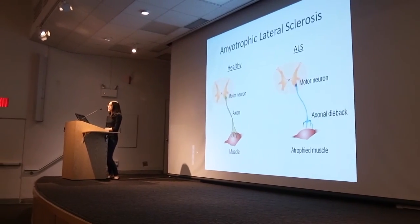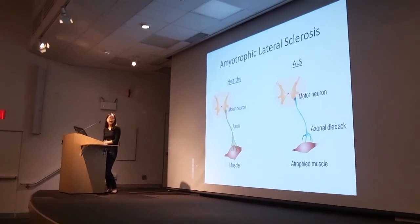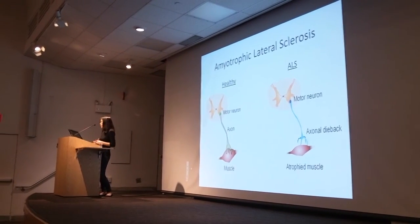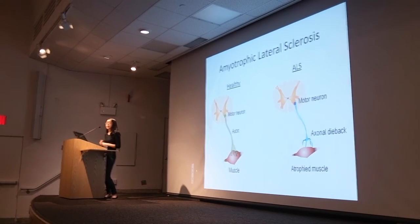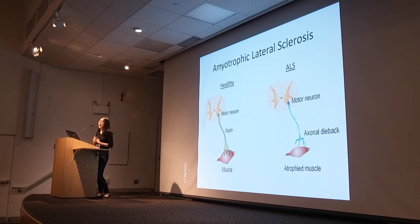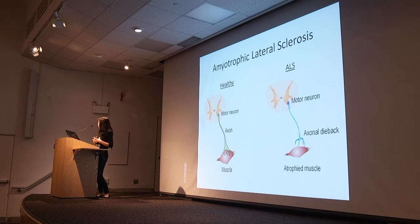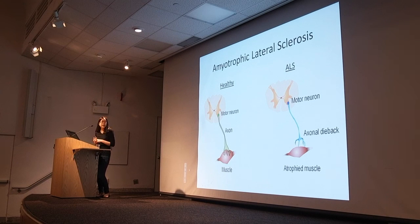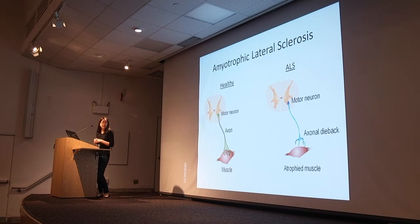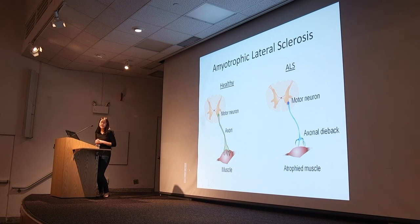Amyotrophic lateral sclerosis is a neurodegenerative condition characterized by motor neuron loss in the brain and spinal cord. When these motor neurons die, they're no longer able to send impulses down the axons to muscle fibers to initiate muscle movement. The muscles that are no longer used become smaller and atrophy as the axon retracts away from the tissue in what's called axonal dieback. The result is that the nerve connection, called the neuromuscular junction — the connection between the nerve and the muscle — is lost, and this results in denervation.